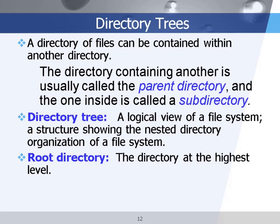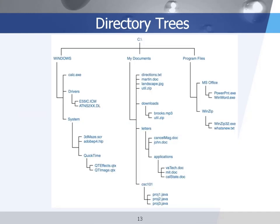The directory that contains other files or subdirectories is called the parent directory, and the one under the parent directory is called a subdirectory. The directory at the highest level is called the root directory. For one directory tree you have only one root directory and can go from the root all the way down to every node of the tree. For example, in Windows the root is the C disk, and under the root we have directories like Windows, My Documents, and Program Files.